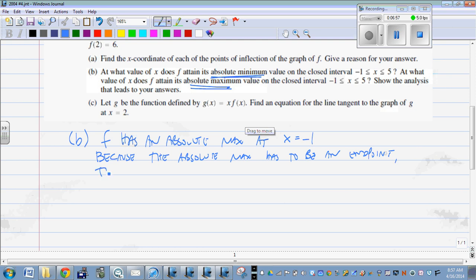The area under the curve—so instead of saying area under the curve, the definite integral from negative one to five of the derivative of f of x dx has to be less than zero because most of the area is negative.